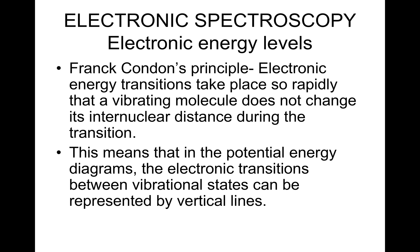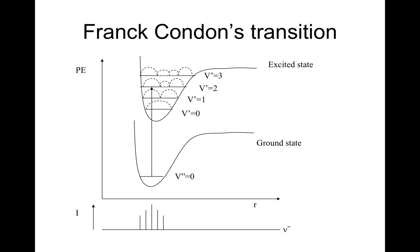This means that in the potential energy diagrams, electronic transitions between vibrational states can be represented by vertical lines. The ground state is shown by one curve while the excited state is shown by another curve. These are the vibrational energy levels in the excited state, and the spectra resulting from transitions between the two states is given at the bottom.